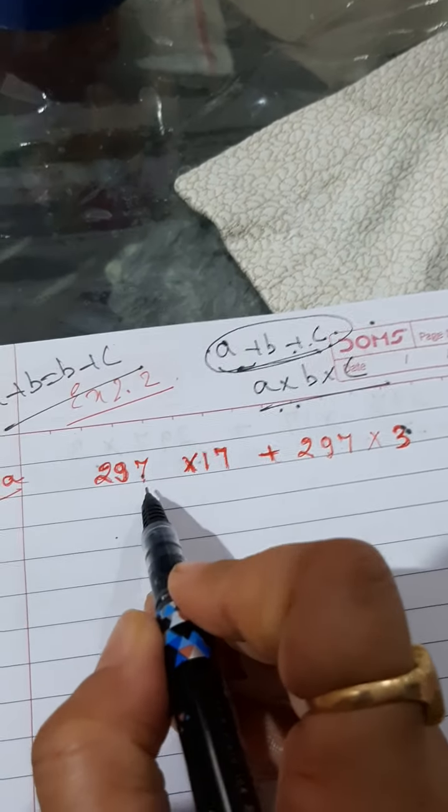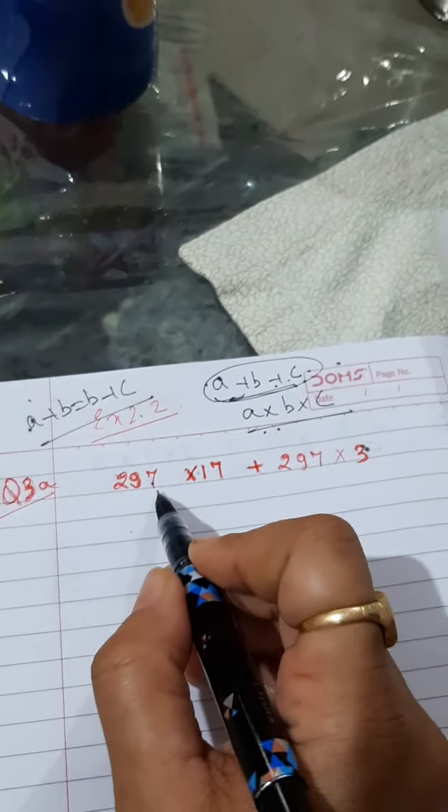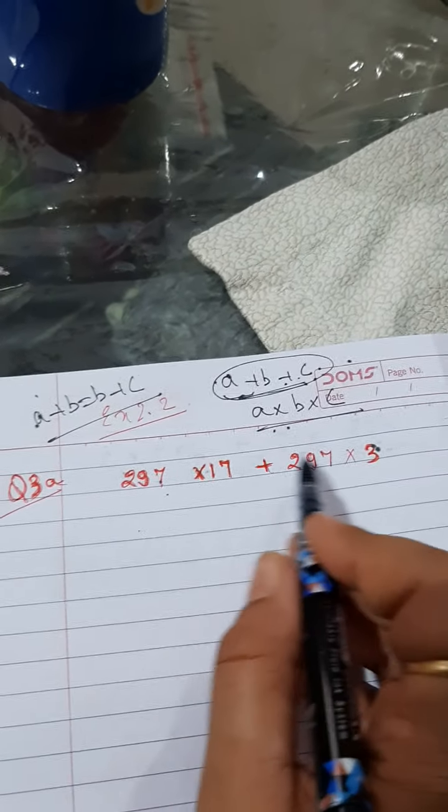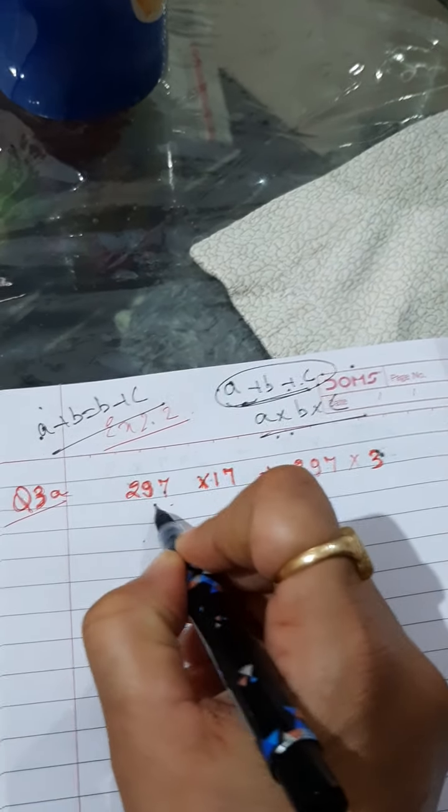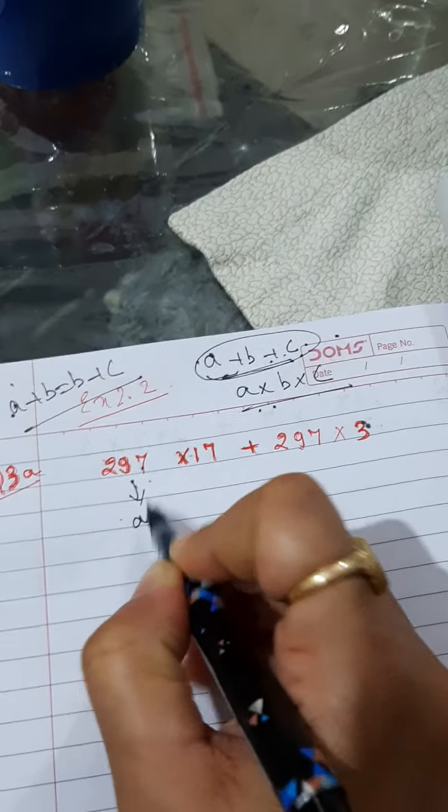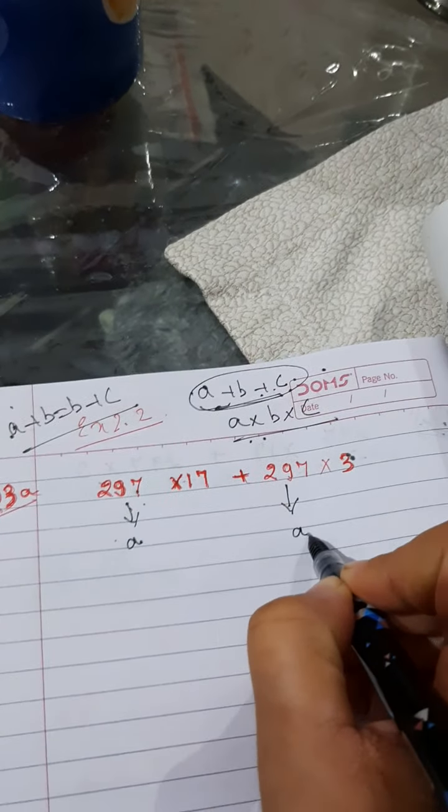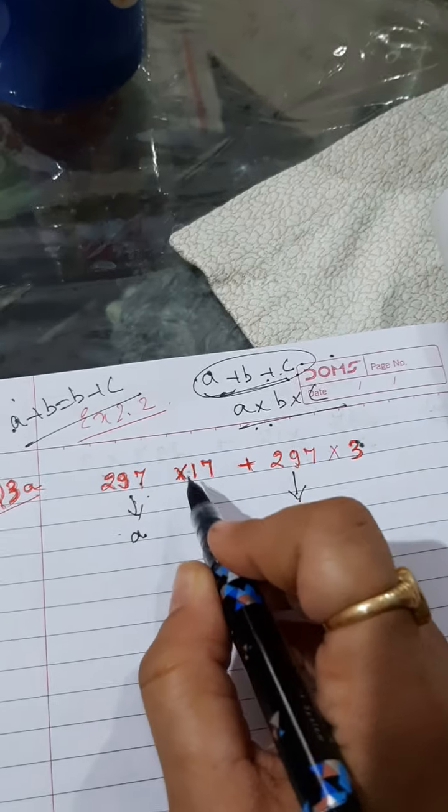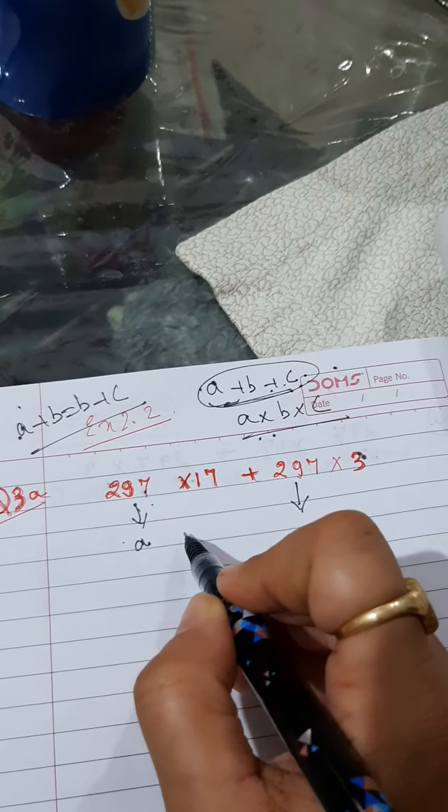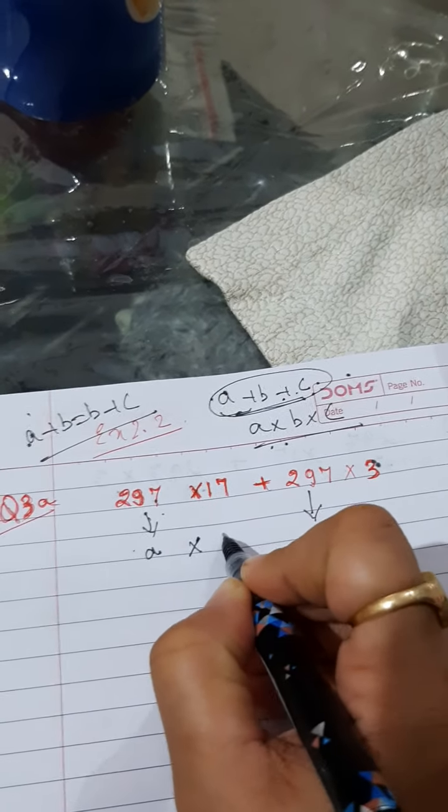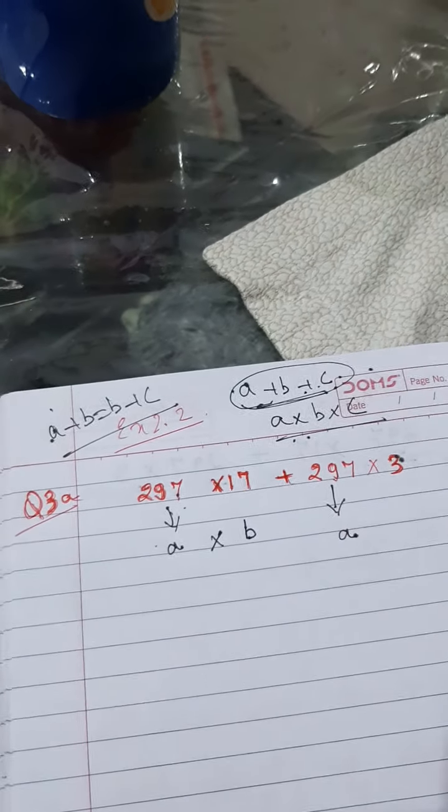Now, the next thing we have to see is here 297 is common for both. So that means this will act as my a. This is my a, here also, this is my a, correct? 17, what is the sign here in between? Into. Into 17 will become b.